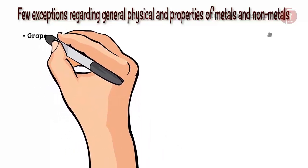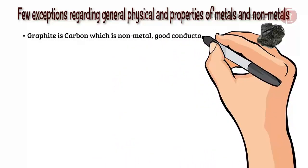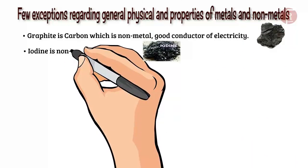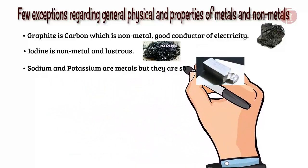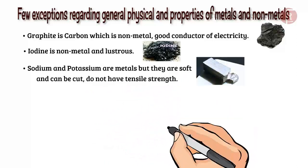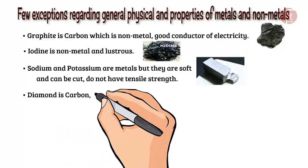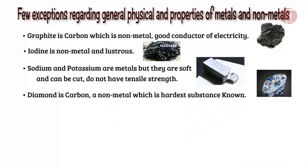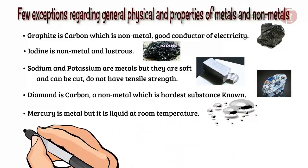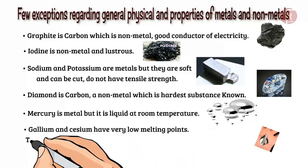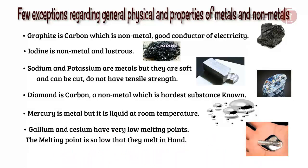There are few exceptions regarding general physical properties of metals and non-metals. Graphite is carbon which is non-metal and it is also a good conductor of electricity. Iodine is non-metal and lustrous. Sodium and potassium are metals but they are soft and can be cut. They do not have tensile strength. Diamond is carbon, a non-metal which is the hardest substance known. Mercury is metal but it is liquid at room temperature. Gallium and cesium have very low melting points. The melting point is so low they melt in hand.